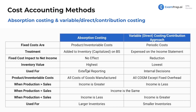Inventory value is lower under variable direct costing because those extra costs are just expensed and not added to the value of inventory. Absorption costing is used for external reporting — it's used for GAAP — whereas variable direct costing is used for internal decisions.